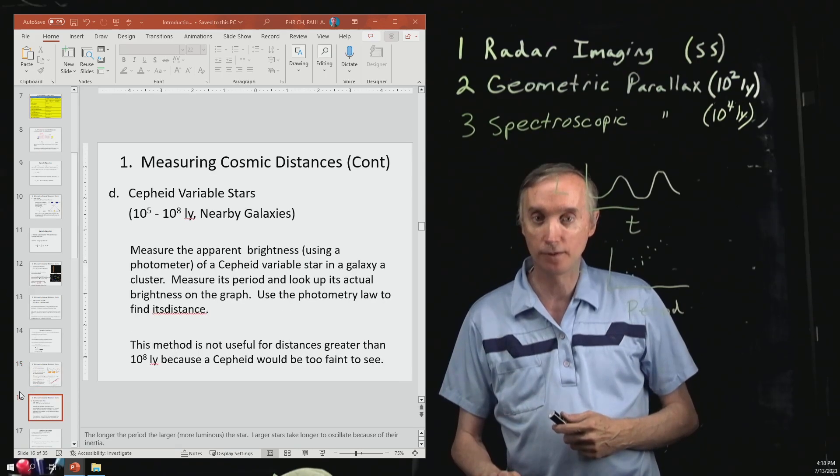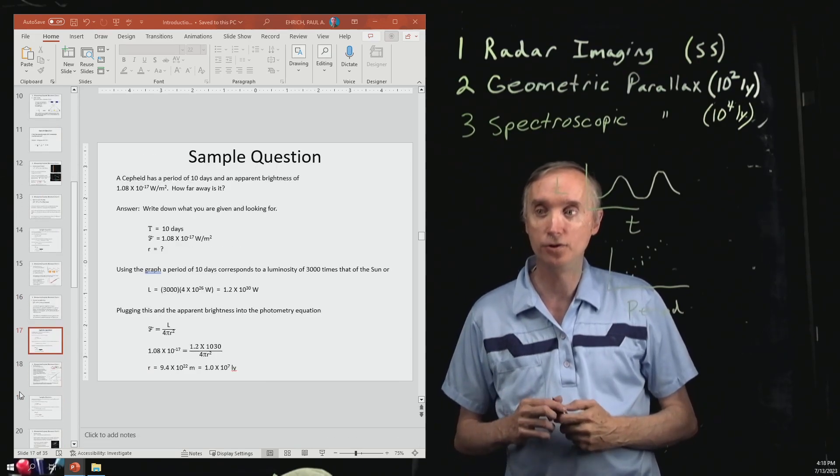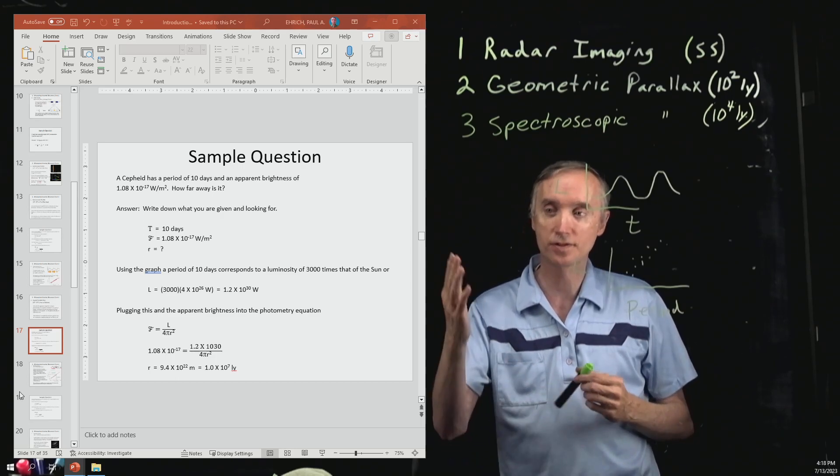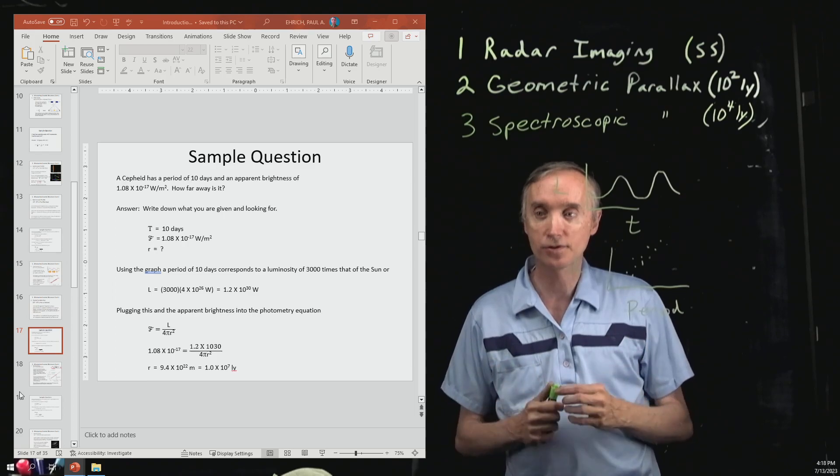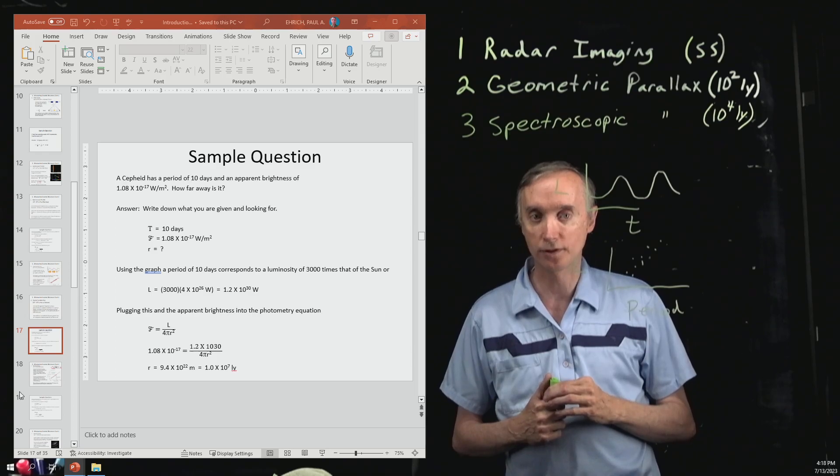So here's an example of how you would use the equation. I'll just let you read through it. But that's how astronomers do it, how they figure out the distances to these astronomical objects.